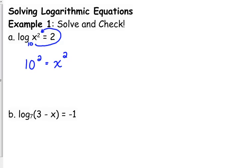Now, just kind of by inspection, it seems like the answer should be 10, right? But there's also another solution, and here's why. 10 squared is equal to 100. 100 is equal to x squared. Anytime you take the square root, what are you supposed to remember? Positive and negative.